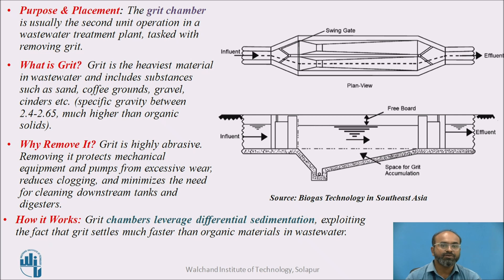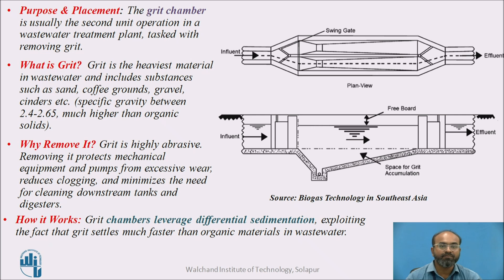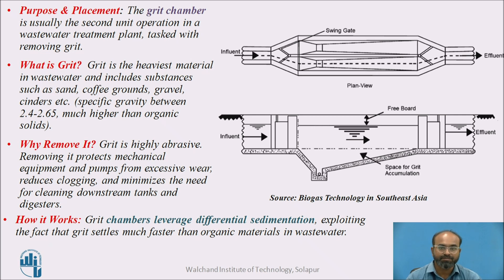Now why do we need to remove grit? Grit is heavily abrasive, which can damage mechanical equipment and pumps from excessive wear. Removing grit also reduces clogging and minimizes the need for cleaning downstream tanks, which are provided in biological treatment units and digesters in secondary or tertiary treatment units.